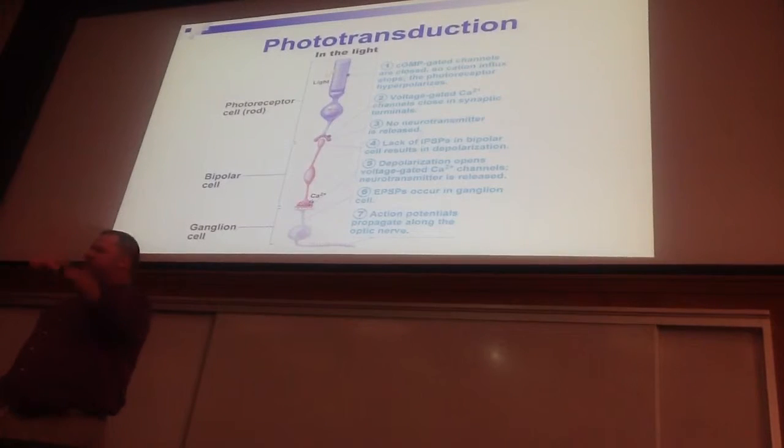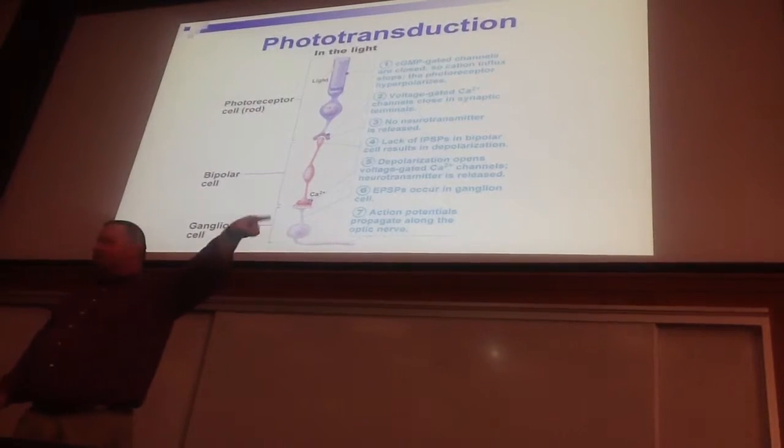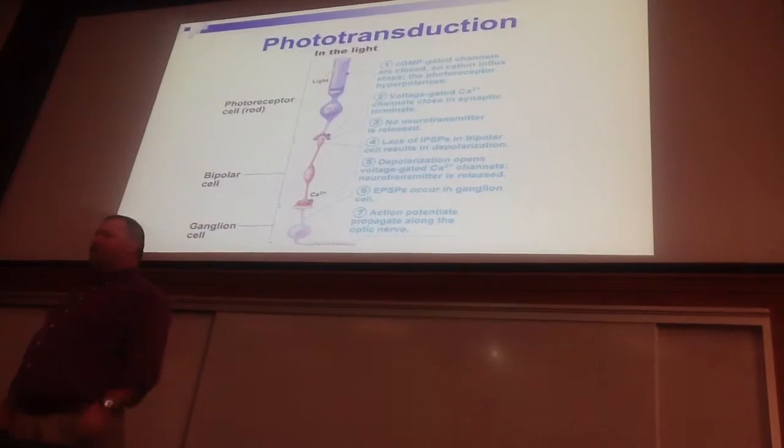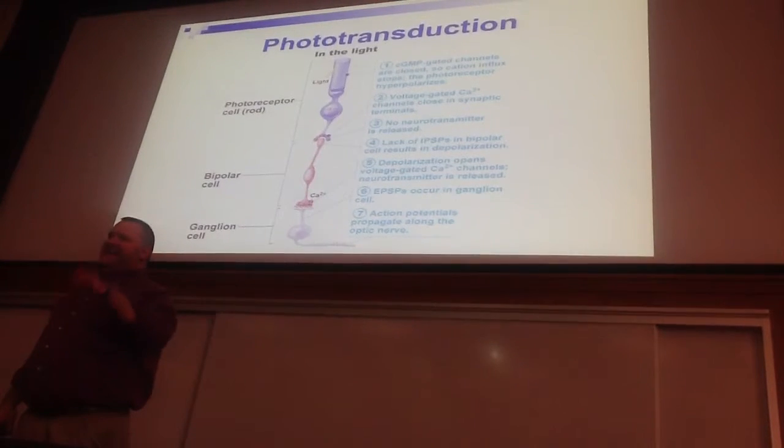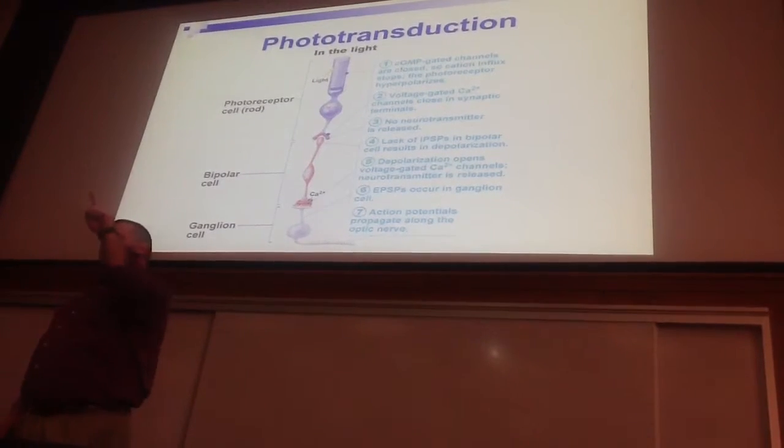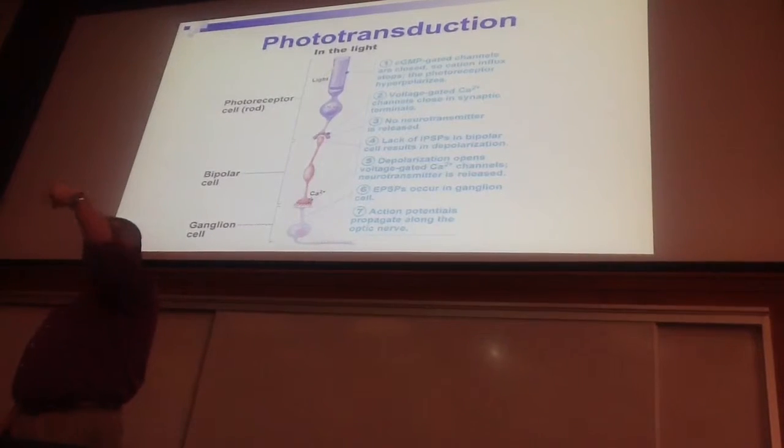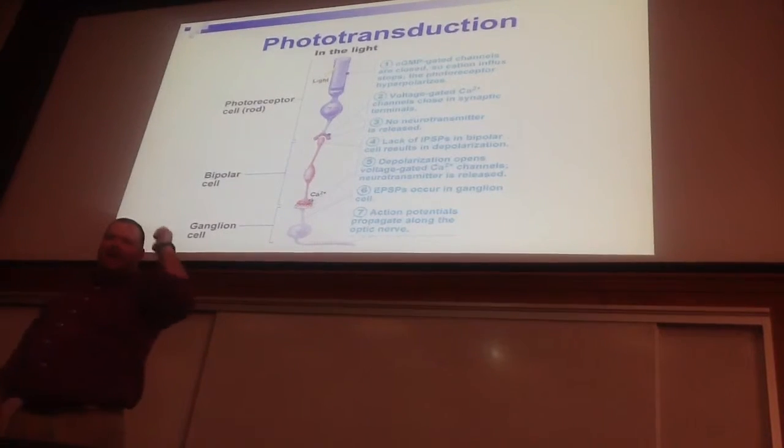And the ganglion cell fires a train of action potentials through the optic nerve into your occipital cortex. And there's vision. You see because you hyperpolarize the photoreceptor and remove its inhibition on the bipolar cell.